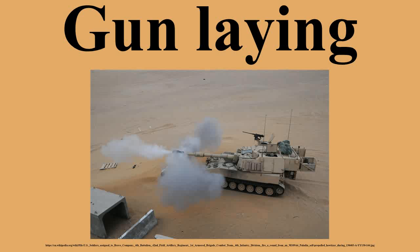With direct fire, laying in the horizontal plane is merely the line of sight to the target, although the layer may make allowance for the wind. With rifled guns, the sights may compensate for projectile drift. With indirect fire, the horizontal angle is relative to something — typically the gun's aiming point — although with modern electronic sights it may be a north-seeking gyro.